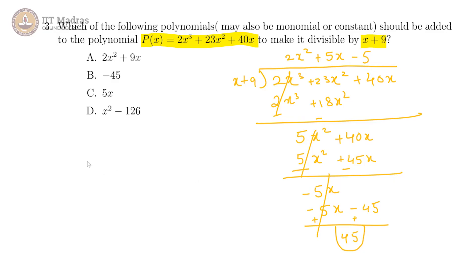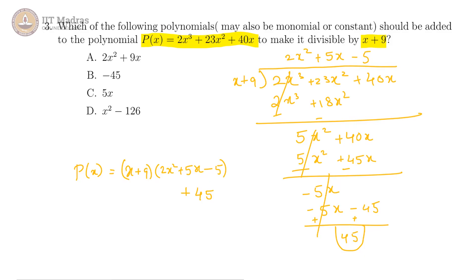So p(x) is essentially (x + 9) into the quotient plus 45. If we subtracted 45 from p(x), we will get divisibility by x plus 9. So option P is necessarily correct.